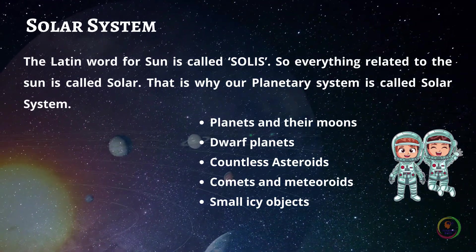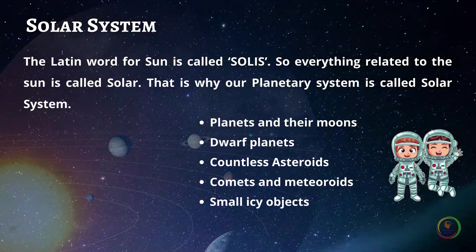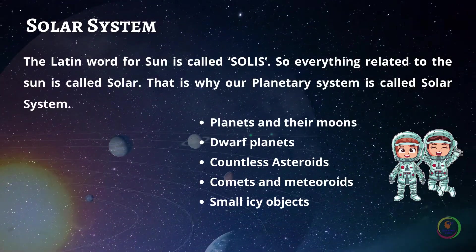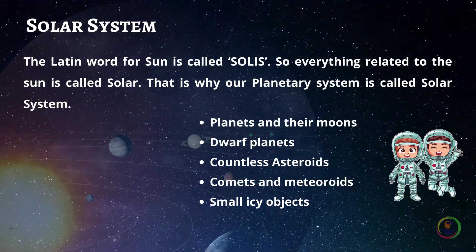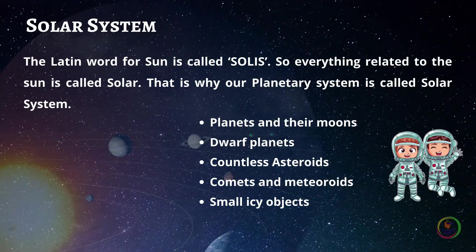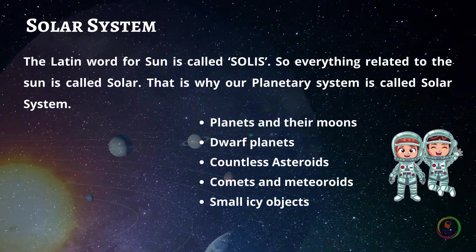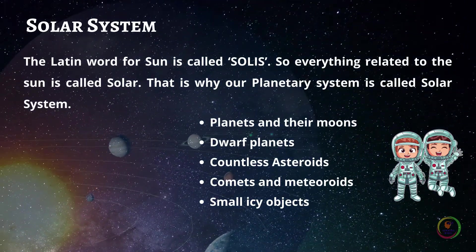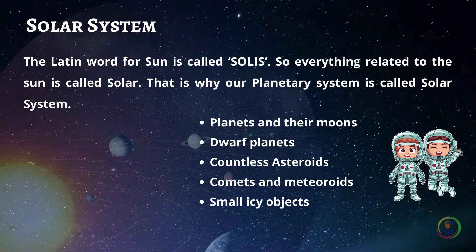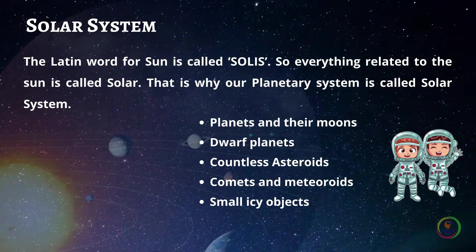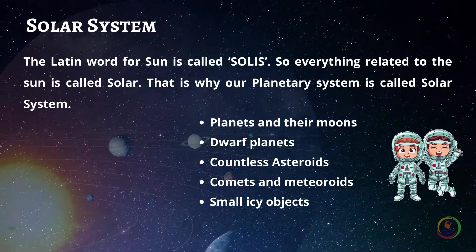That is why our planetary system is called the solar system. The solar system consists of planets and their moons, dwarf planets, countless asteroids, comets, meteoroids and small icy objects.